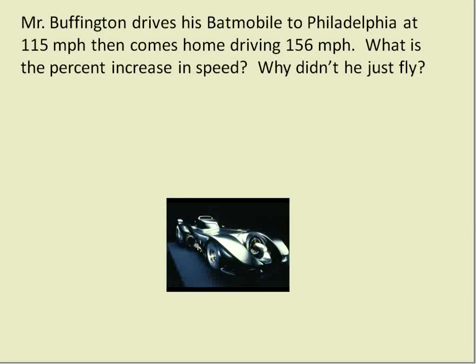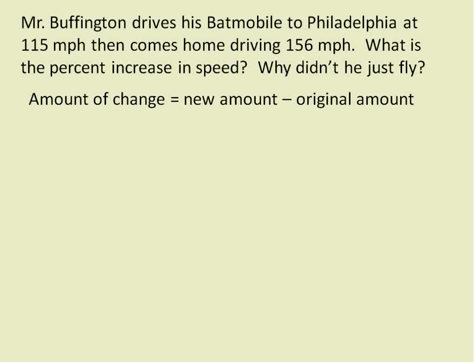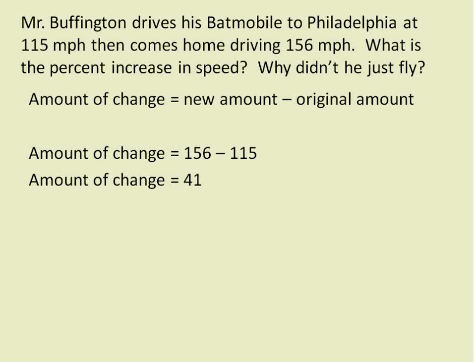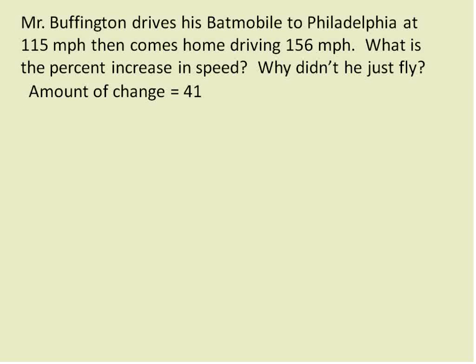Let's take a look at a word problem. Mr. Buffington drives his Batmobile to Philadelphia at 115 miles per hour, then comes home driving at 156 miles per hour. What is the percent increase in speed? We use exactly the same steps as before. We find the amount of change: new amount minus original amount, so 156 minus 115. That tells us the speed increase is 41 miles per hour. The amount of change is 41 miles per hour.